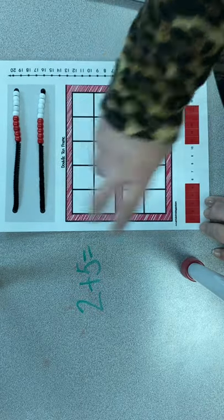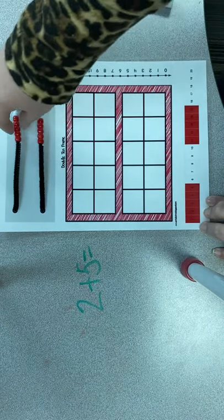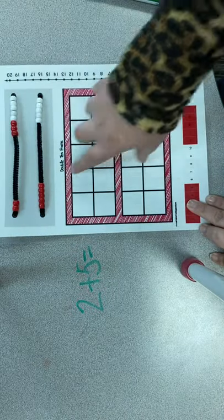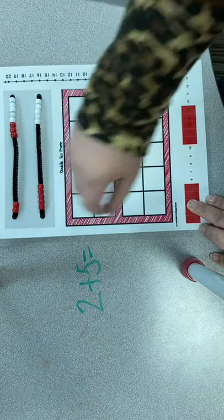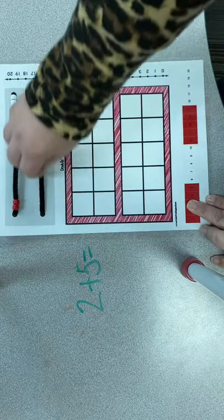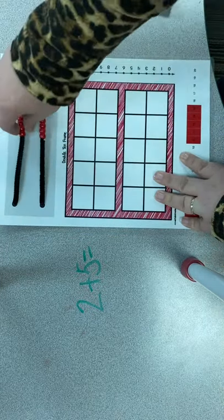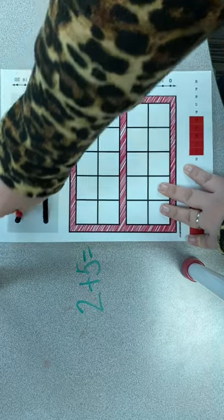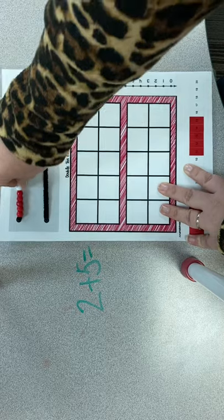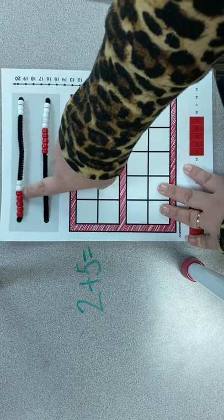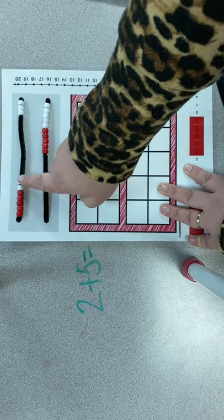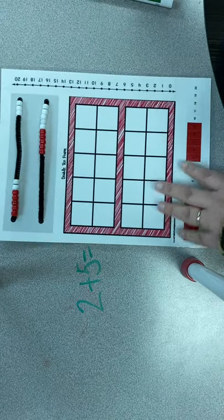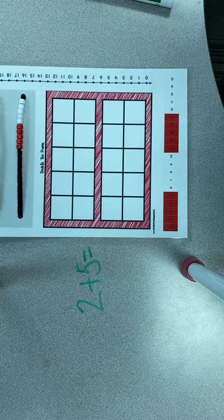So on our rekenrek, we have two ways to do it. We can move two on the top and five on the bottom and count it that way. Five, six, seven. Or we can move them all on one bar. And that makes it a little bit easier for my brain. So this is how I tend to do it. Two and five. And I know that's seven because I see the five and the two.